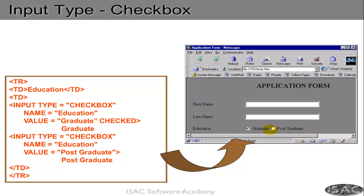Here is another example where the input type is checkbox. Name equals to education, value equals to graduate, and it has the checked attribute, meaning it is checked by default. Another input with type checkbox, name is education, and value equals to postgraduate. It is important to give both checkboxes the same name so they become part of a group. With the same name education, checking one or the other means you cannot check both — they are part of the same group.